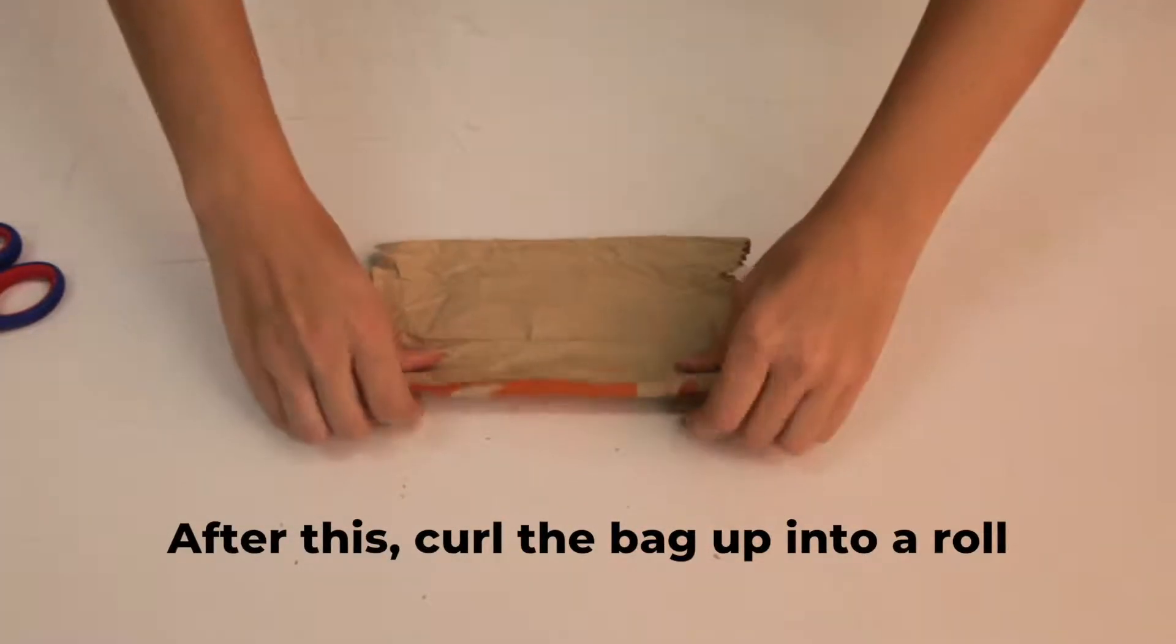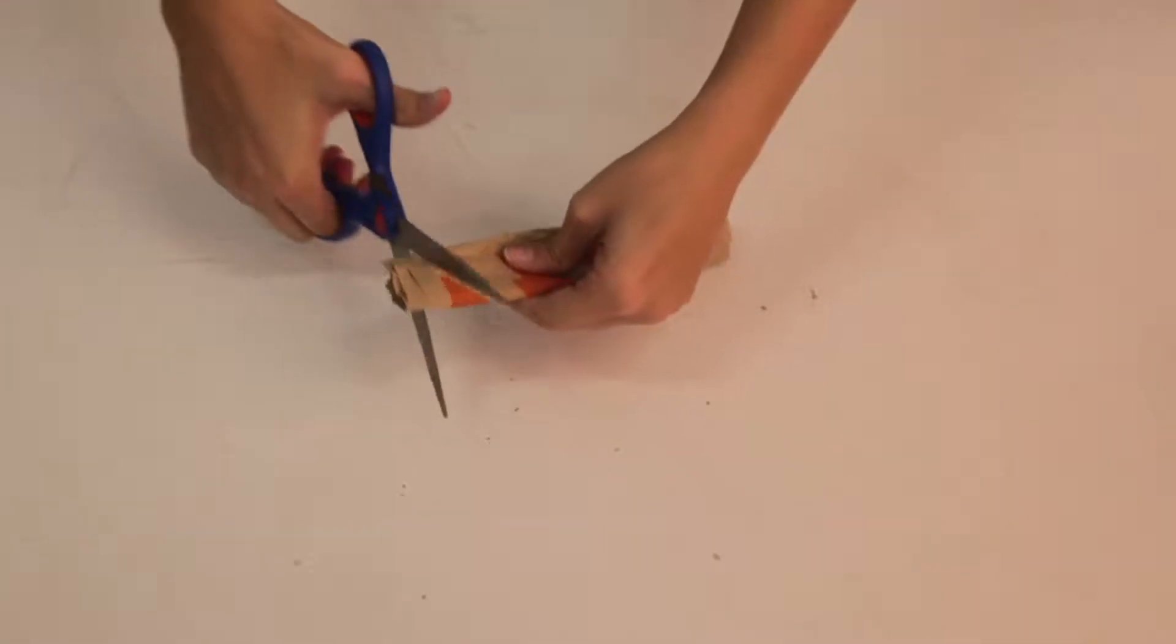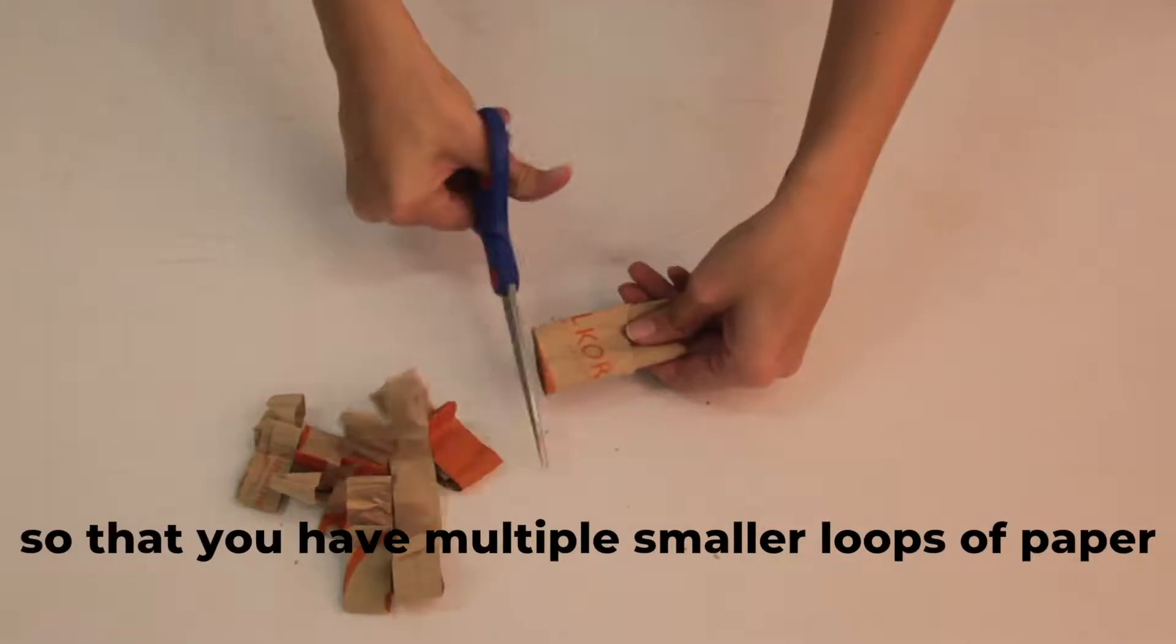After this, curl the bag up into a roll. Once you've done rolling your paper, cut through the entire roll so that you have multiple smaller loops of paper.